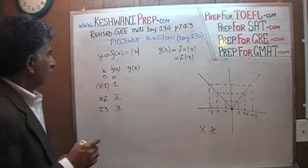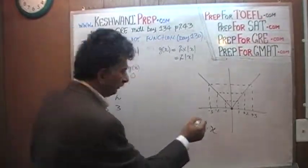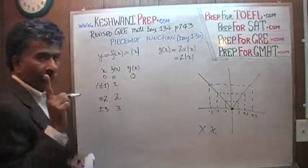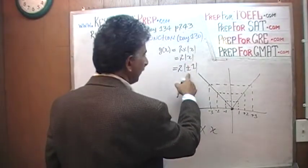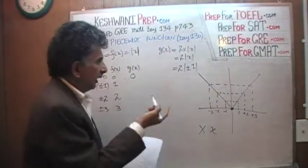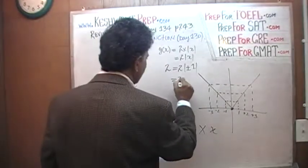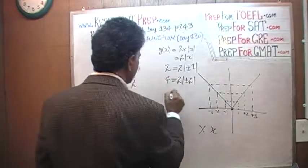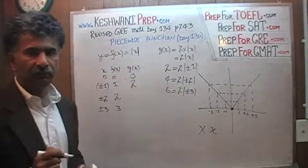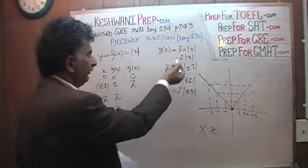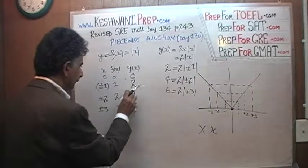When x is 0, 2 times 0 is 0, so y is also 0 — just like before. The new graph also starts out at the origin. When x is positive 1 or negative 1, the absolute value is 1, and 1 times 2 is 2, so y is 2. When x is positive 2 or negative 2, y is going to be 4. When x is positive 3 or negative 3, y is 6. All the values of y are doubled — which is exactly what 2 times f means.